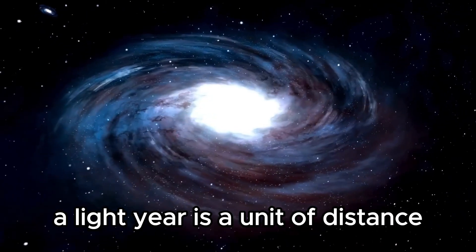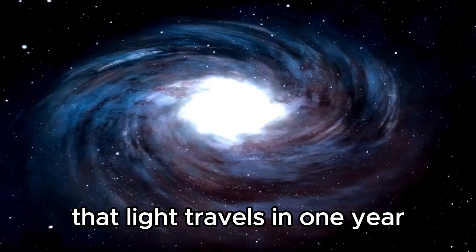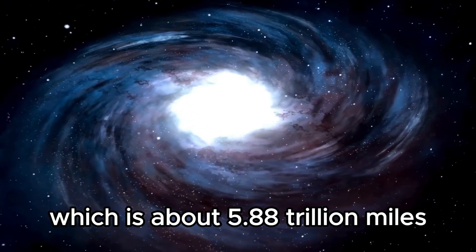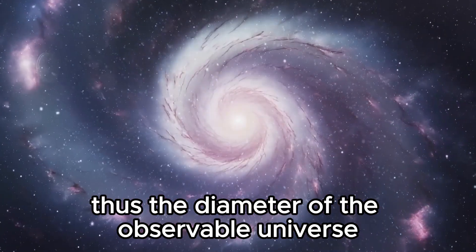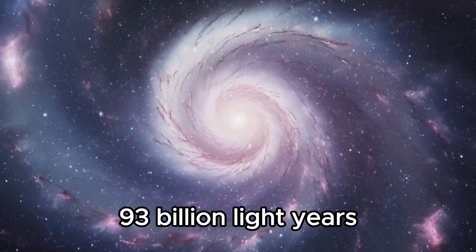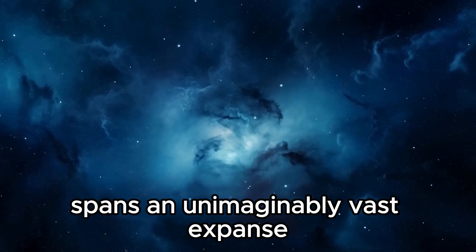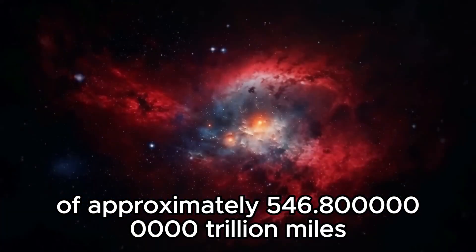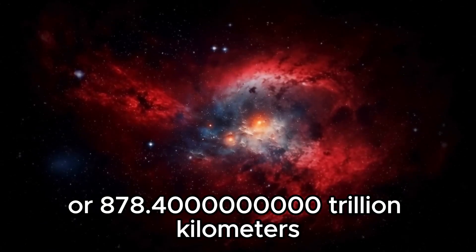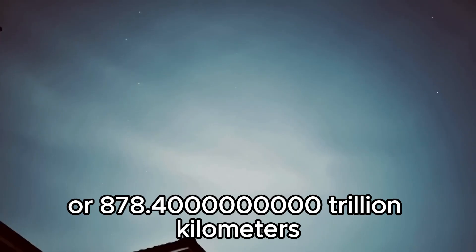A light-year is a unit of distance that light travels in one year, which is about 5.88 trillion miles or 9.46 trillion kilometers. Thus, the diameter of the observable universe, 93 billion light-years, spans an unimaginably vast expanse of approximately 546.8 billion trillion miles or 878.4 billion trillion kilometers.